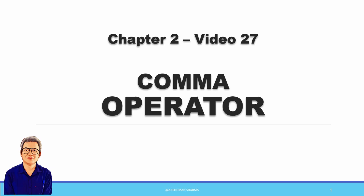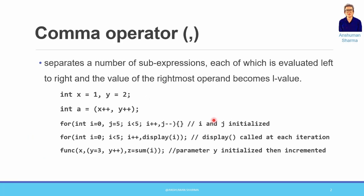Hello everyone. In this video I will be discussing the comma operator, another operator available in C++ and also in C. This comma operator is used frequently while working with for loops when we have multiple variables in the for loop — for example, int i equals 0 and j equals 5. It separates sub-expressions; it can be 2, 3, or more.